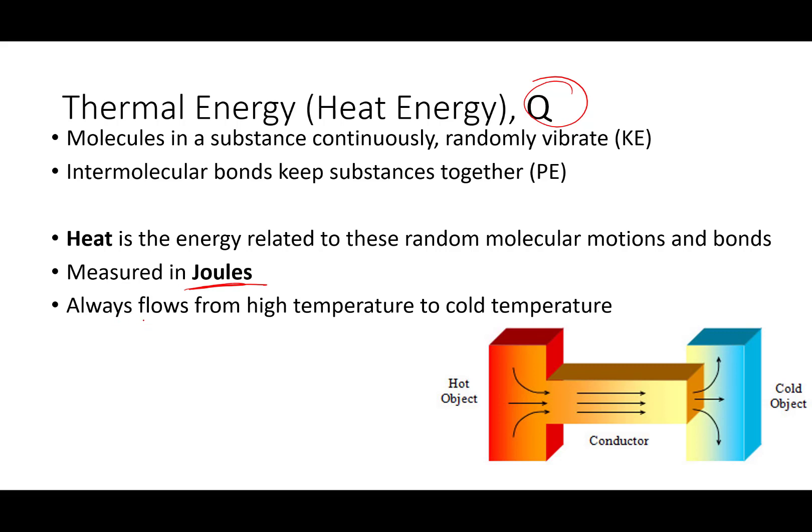What's important about heat is it always flows from a high-temperature object to a low-temperature object. So, for example, if you place an ice cube on a pan, the ice cube is going to eventually start to melt. And that's because heat is flowing into the ice cube from the pan. If we were to remove the ice cube then and feel the pan or measure the temperature, it would be at a colder temperature. That's because it lost heat energy.